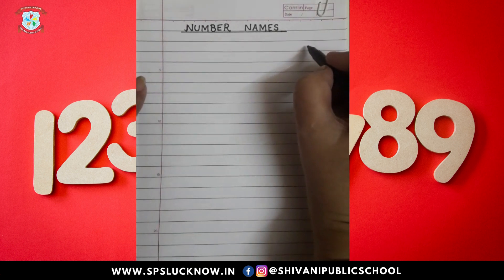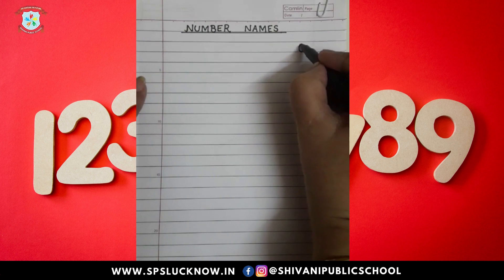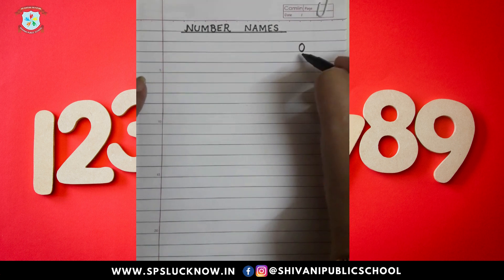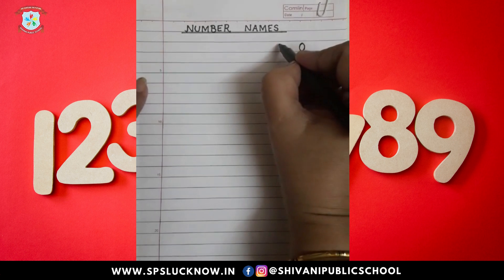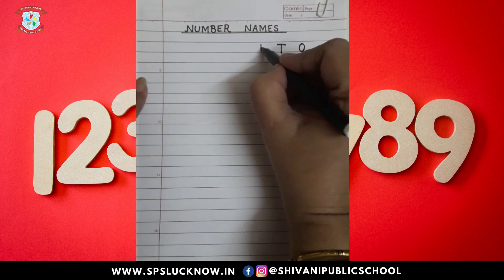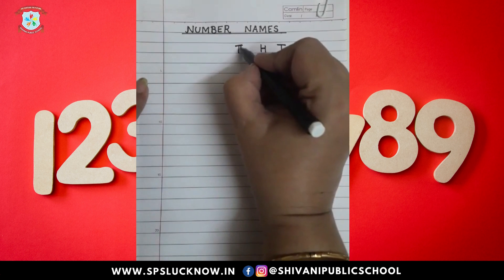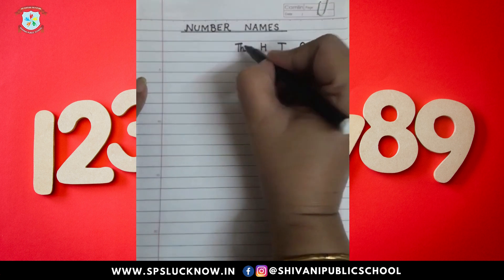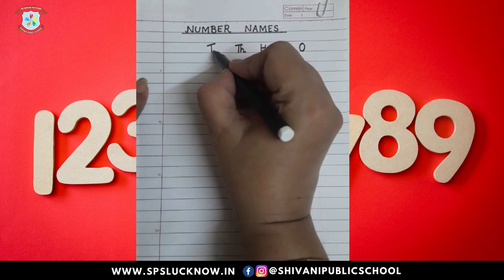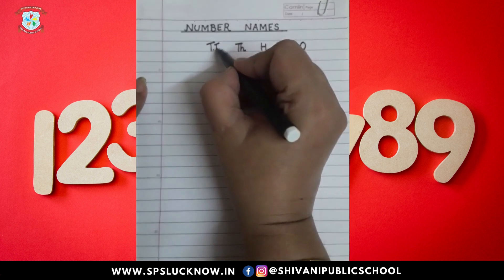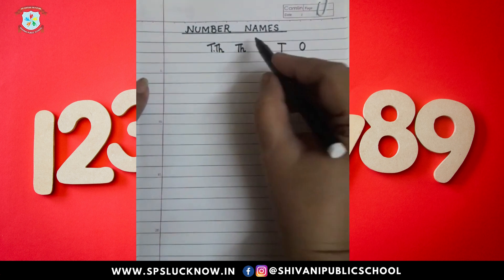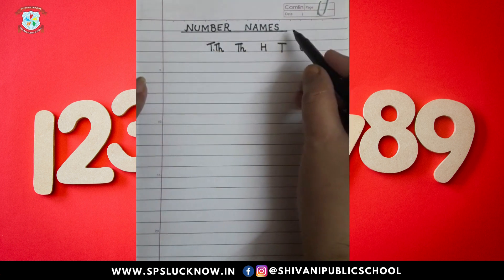For reading the numbers, we will write the place of the numbers. The first place is ones, then tens, then hundred, then thousand, then ten thousand. These number names are for class 4.